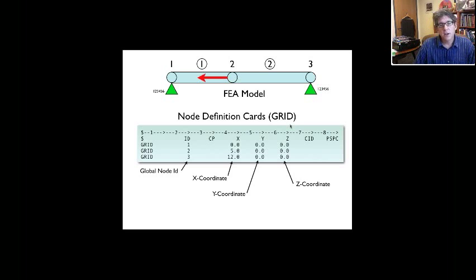The first set of cards in the bulk data section is to define the nodes. And in NASTRAN, they refer to these as grid points. So you can see here, we have three nodes. Those are the three rows shown here. The first field just contains the keyword grid. The second field gives a global ID number. So we have node one, two, and three.